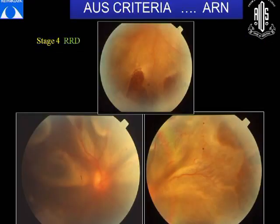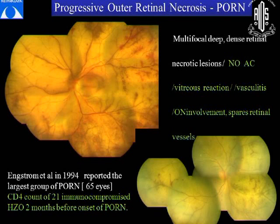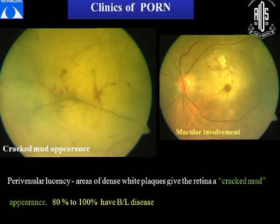Coming to progressive outer retinal necrosis, it was first described by Engstrom et al. in 1994 in a group of 65 eyes. Most of these patients had herpes zoster ophthalmicus 2 months prior to the onset of PORN, and they all had CD4 counts of around 21. Clinically, these lesions are multifocal, deep, dense, necrotic lesions with absolutely no inflammation in the anterior chamber or vitreous. There is no vasculitis or optic nerve head involvement. It often spares the retinal vasculature, giving a cracked mud appearance. Macular involvement is seen, and most often this disease is bilateral.